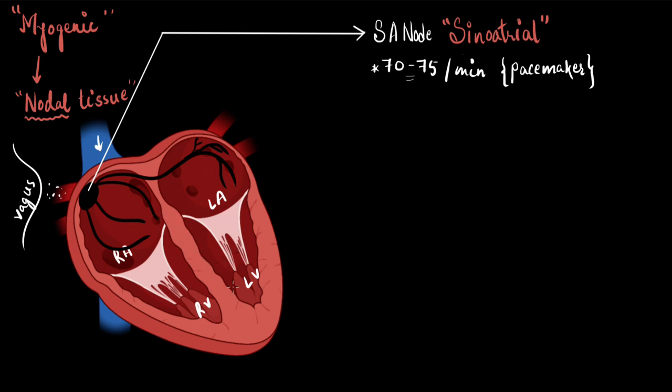Therefore, to bring the impulse down into the ventricles, we have another nodal tissue at the lower left corner of the right atrium. We call it the AV node, atrioventricular node. And it is called so because it is present at the junction between the atrium and the ventricle.